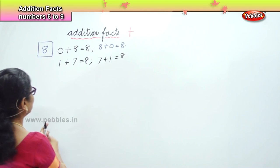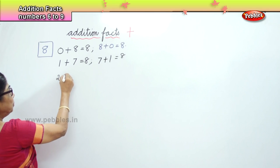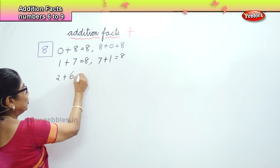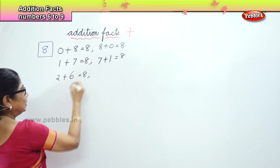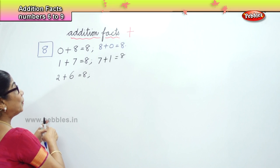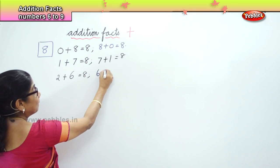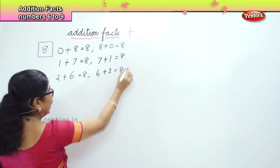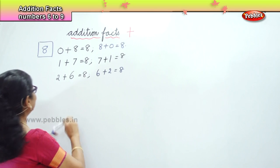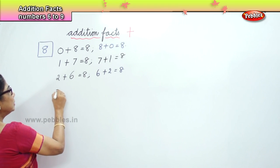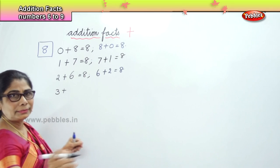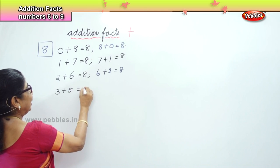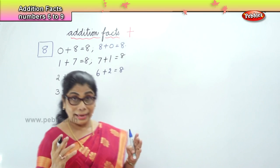Next is 2. 2 plus 6 equal to 8. And the reverse: 6 plus 2 is also equal to 8. Then 3 plus 5 is equal to 8.